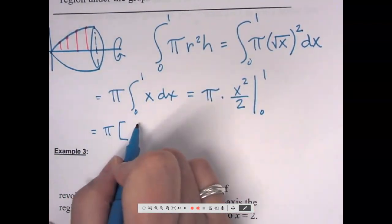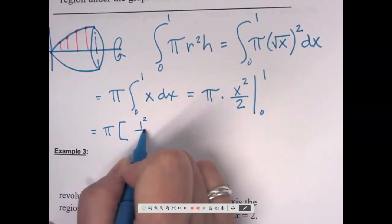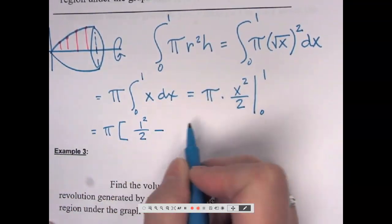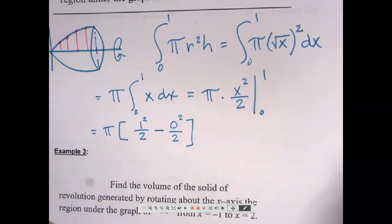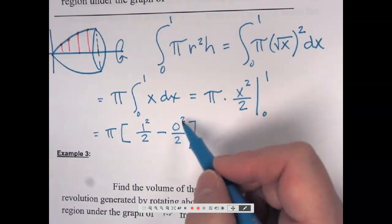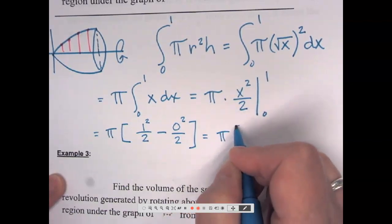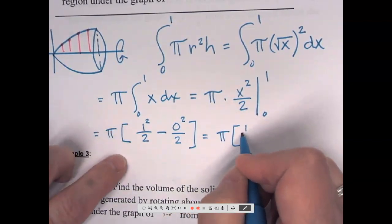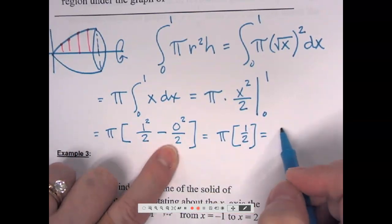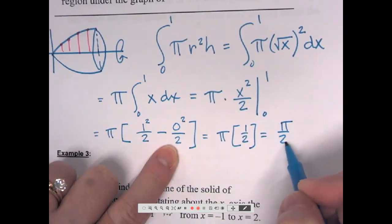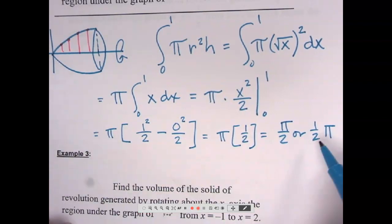So now I'm going to still leave pi out front. And I'm going to sub in the 1. So 1 squared over 2 minus sub in 0. Of course, that second fraction is just 0. So I have pi times 1 half minus 0. So I just have, you can do 1 half pi or pi over 2 would be our volume.